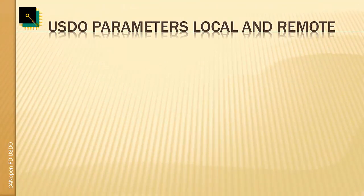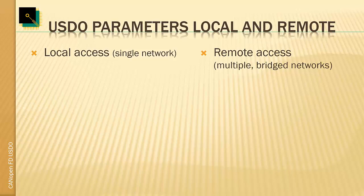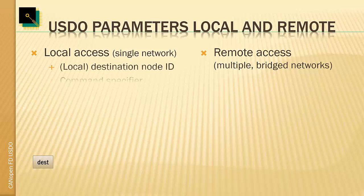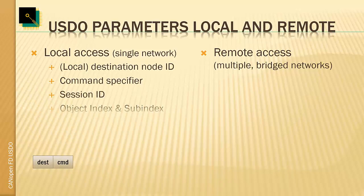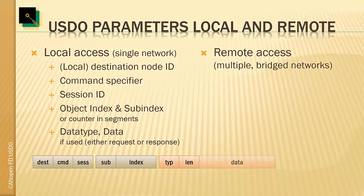The protocol parameters used within a USDO request and response differ depending on whether we have a local or remote access. A local access is to one CANopen FD network with node IDs 1 to 127. A remote access is possible to additional CANopen FD networks with their own nodes from 1 to 127 that are behind bridges or gateways. The service parameters always present are the destination node ID, the command specifier (read or write, expedited, segmented, or other transfer), a session ID, the object referred to by index and subindex, and the data type and data itself.